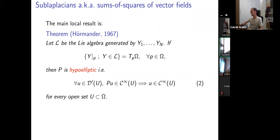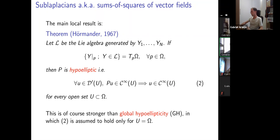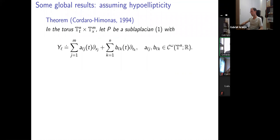Global hypoellipticity is exactly the same statement but where we only look at the whole manifold as our open set, and we don't expect the regularization to hold in smaller open sets. I mentioned Hörmander's result, but I will be mostly interested in global hypoellipticity in what follows.